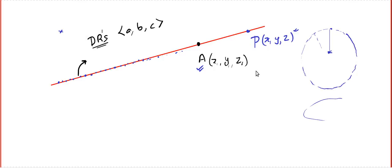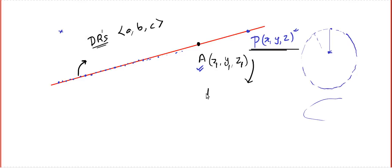We have a line. A fixed point x1, y1, z1 is given, and the direction ratios of the line are also known. For locus purposes, we take a point x, y, z. The locus point can be anywhere — it represents all the points on the line. Those who watched lesson 1 will remember that given any two points, you can write the direction ratios as x minus x1, y minus y1, z minus z1.